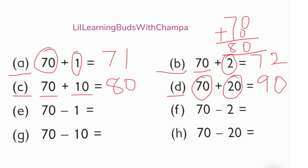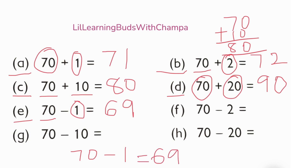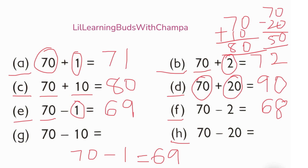Now take away — subtraction. Take away 1 from 70: if you have 70 blocks and take away 1 block it becomes 69. Take away 2 is 68. How about 70 take away 20? 70 take away 20 is 50.